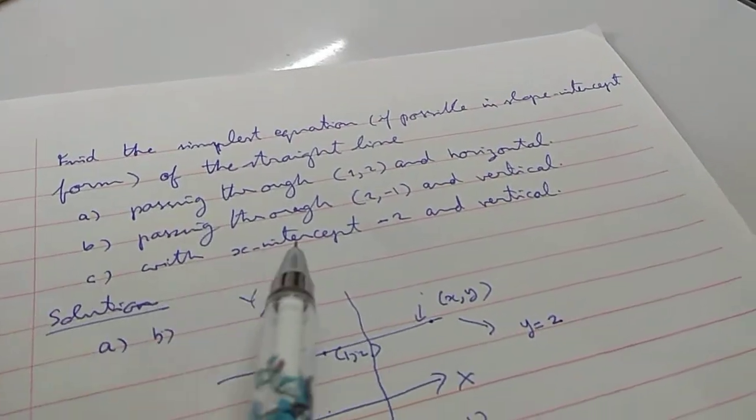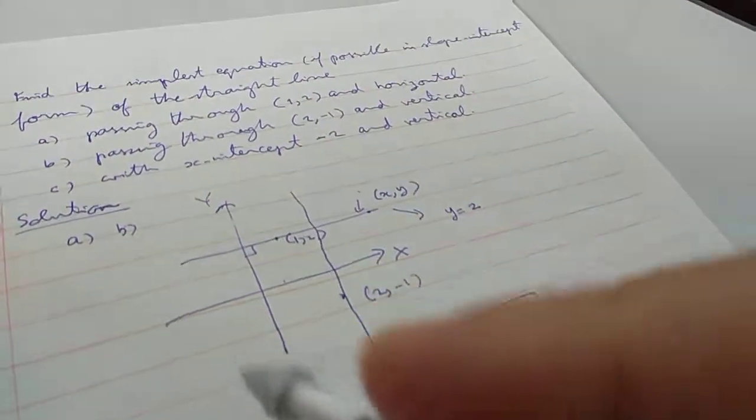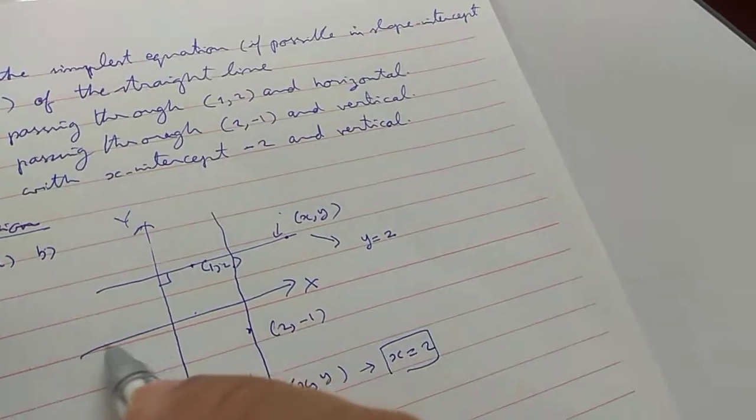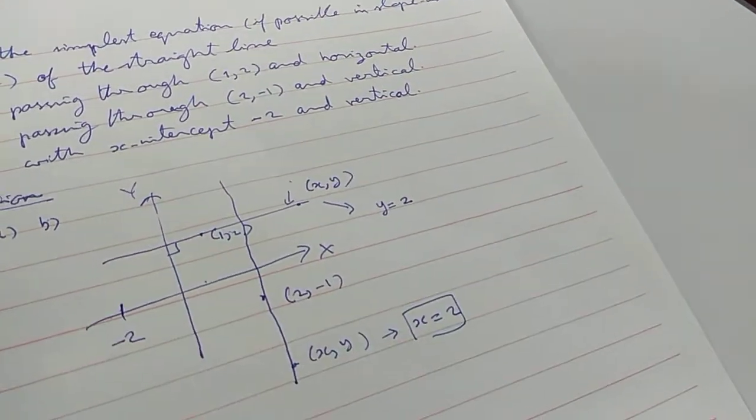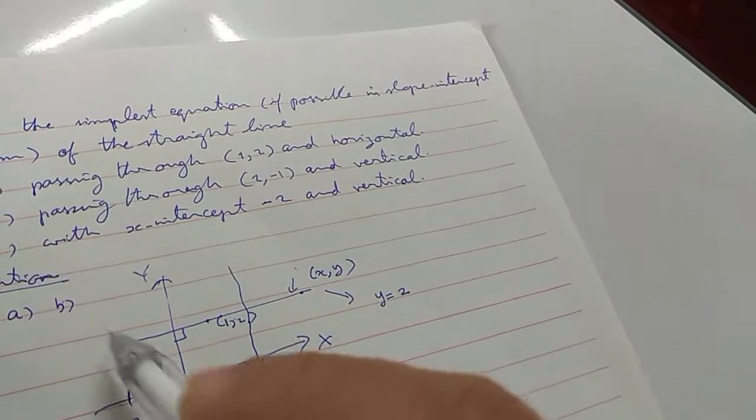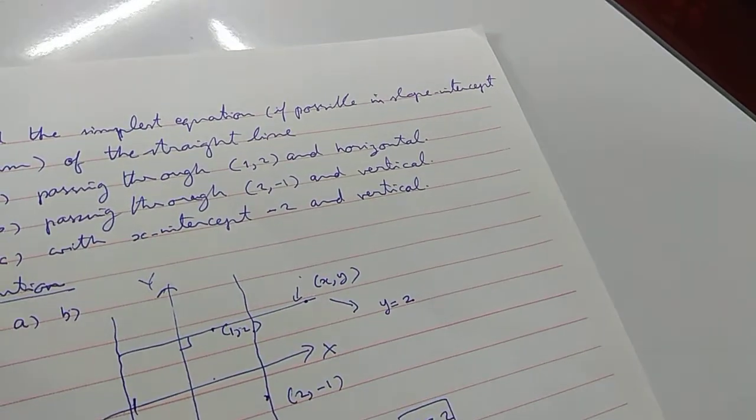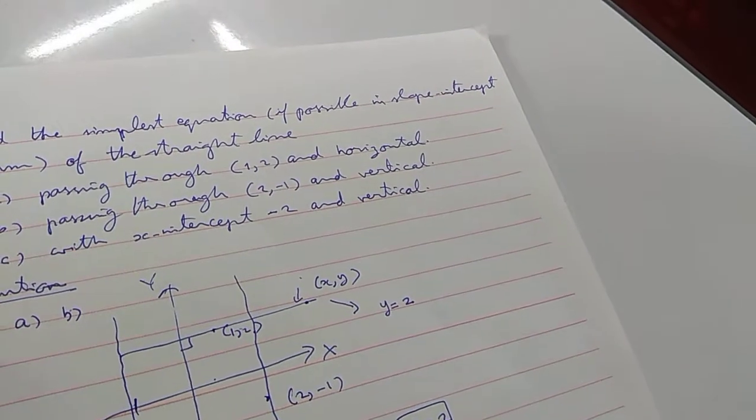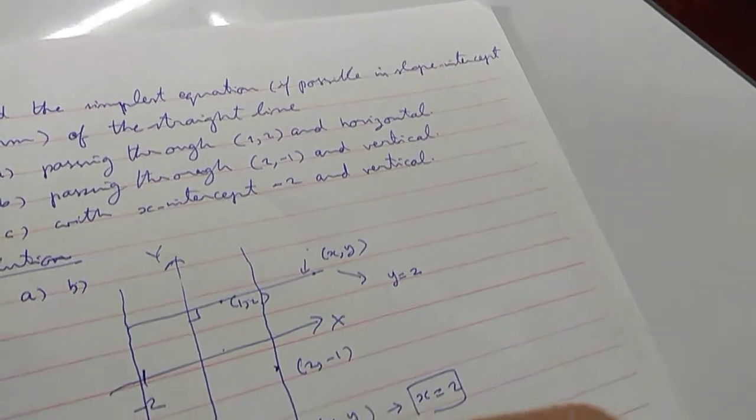C: x-intercept negative 2, and vertical. So the equation is x is negative 2.